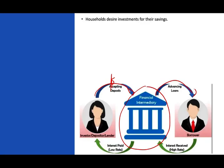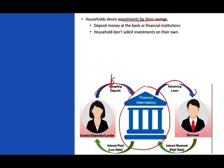Households want to earn a return on their savings, so they deposit money at a financial institution or buy stocks and bonds. It is time consuming, costly, and requires expertise to assess credit and market risk — that's why financial intermediaries are important. Similarly, corporations and governments don't sell most of their securities directly to individuals; they sell to institutions, because individuals have already given their money to those institutions.